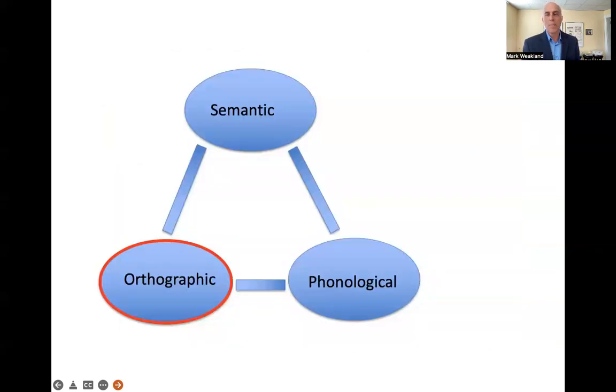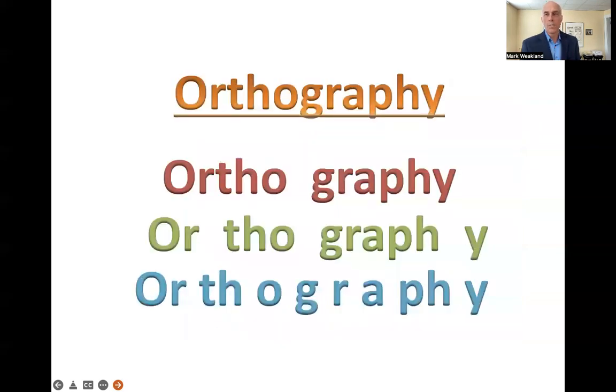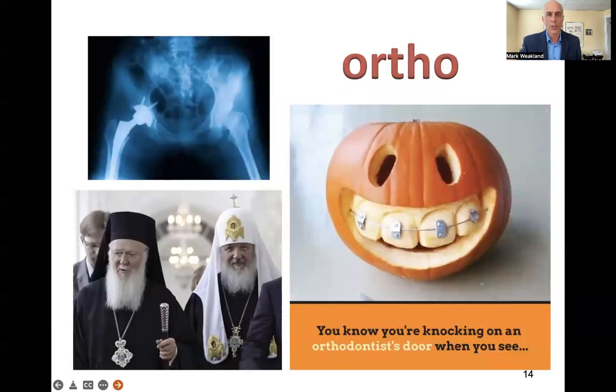The third piece of the puzzle and very important to reading is the orthographic processing area or the spelling area, the word form area where words come together and are processed and then stored. I don't want us to think of orthography in terms of just spelling like a spelling list or a spelling quiz. It's more rich and nuanced than that. So let me break it apart for you. Orthography. The ortho means straight, true, and correct.